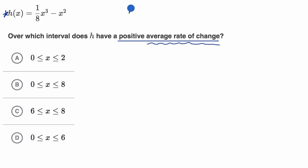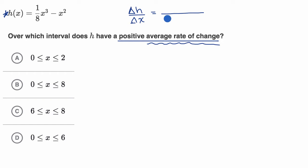You can view it as the change in your value of the function for a given change in x, the underlying variable. We could also view this as, if we want to figure out the interval, it would be x final minus x initial in the denominator, and in the numerator, the value of our function at x final minus the value of the function at x initial.